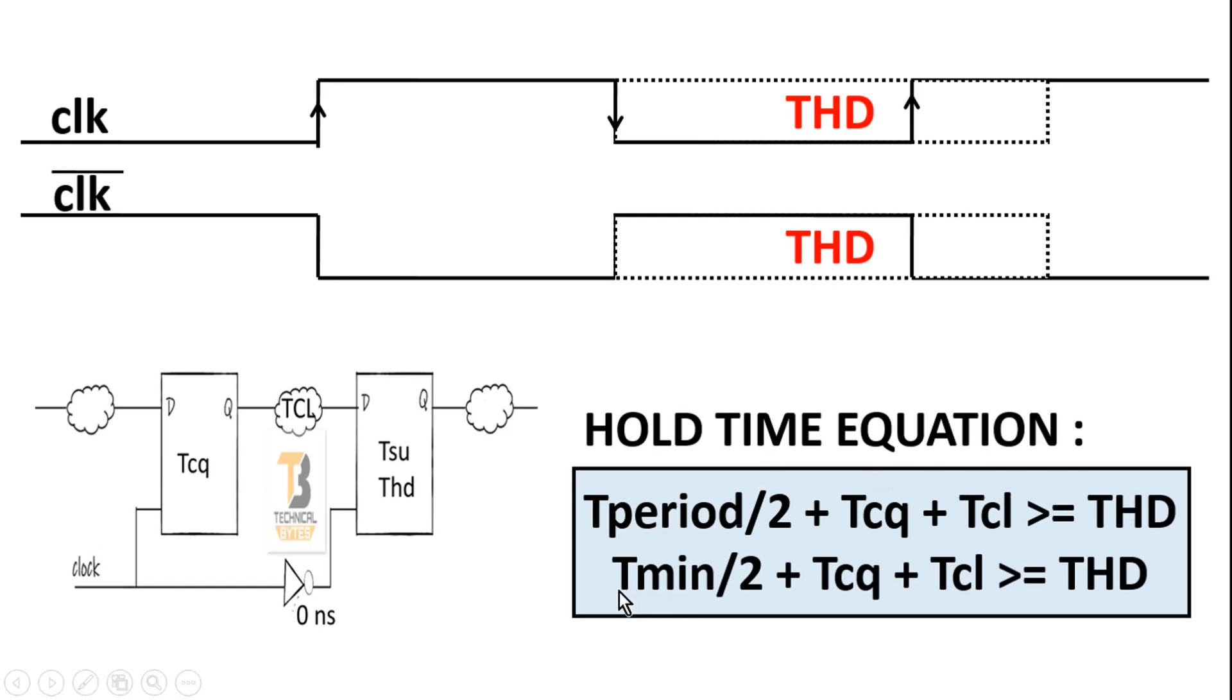And in the worst case, if we apply the minimum time period of operation for which this circuit will not have any setup violation, then Tmin/2 plus Tcq plus Tcl must be greater than or equal to the hold time of the second flip-flop. Let me elaborate on this hold time equation. For this T_period/2 duration, we know that the input will always be stable because flip-flop 1 is not transmitting anything.